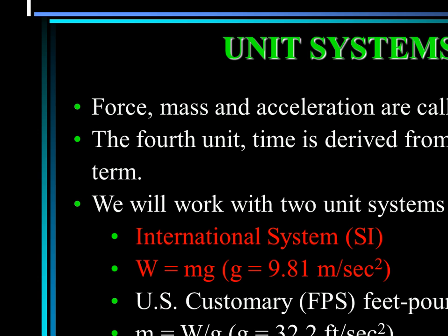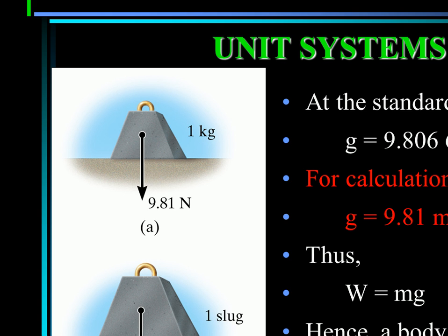At the standard location, G is equal to 9.81. For calculation, we use G equals 9.81, such that W equals Mg. A body of mass 1 kg has a weight of 9.81 Newtons, and a 2 kg body has a weight of 19.62 Newtons.